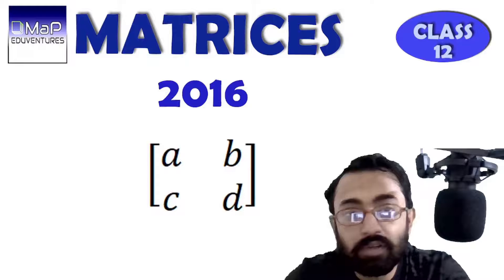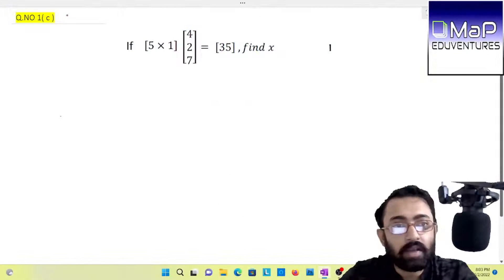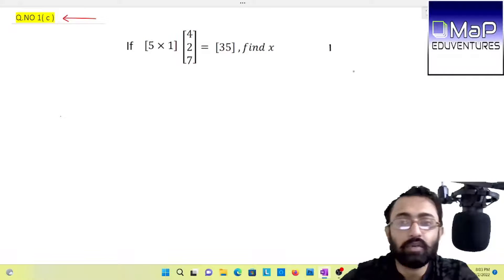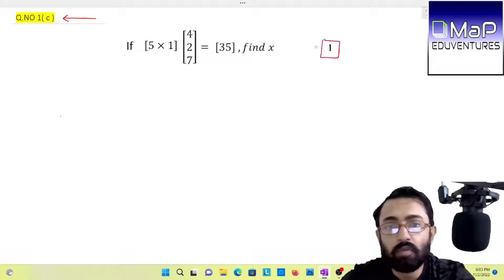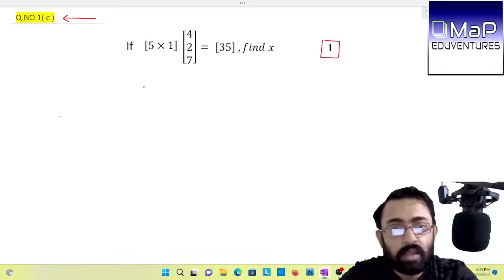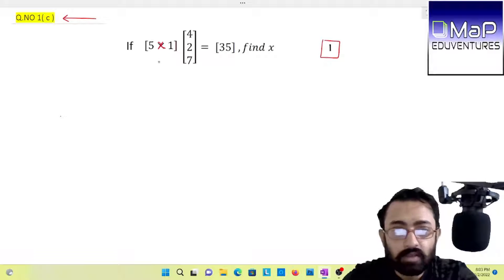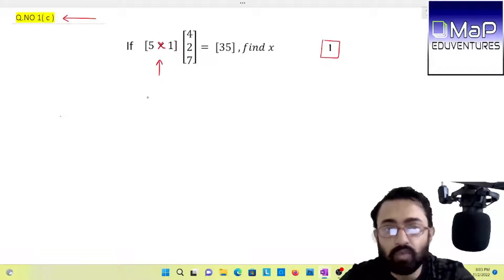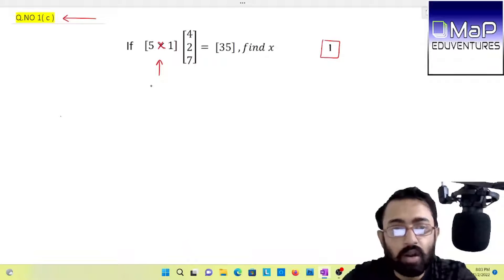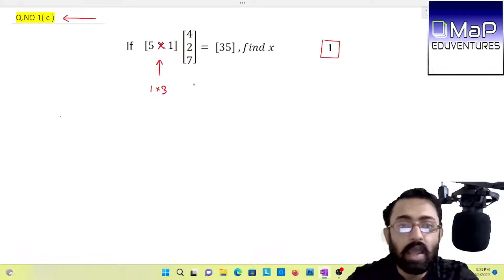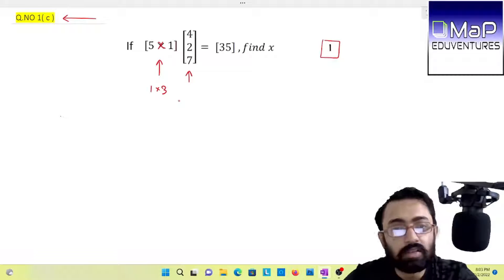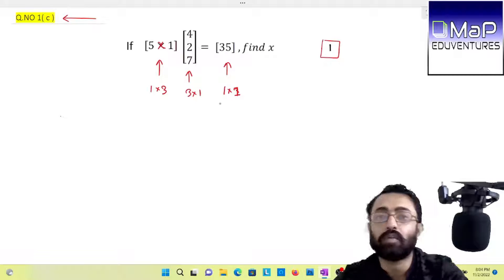Let us begin with the first question of 2016. The first question is 1C, equation number 1C of 1 mark. If the matrix is 5x1, so it is a matrix of order 1 cross 3, and another matrix whose order is 3 cross 1, so we multiply another matrix which is of 1 cross 1, then find the value of x.